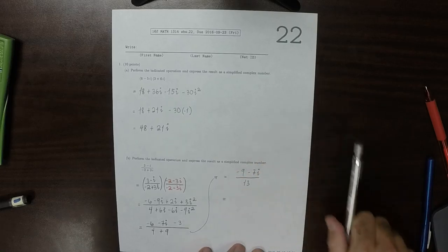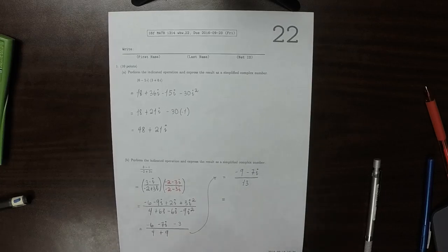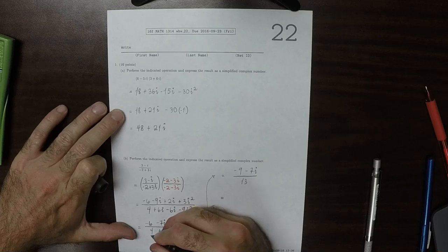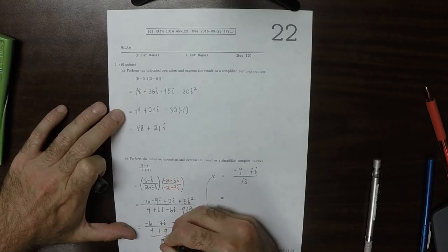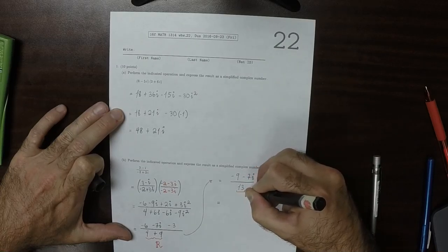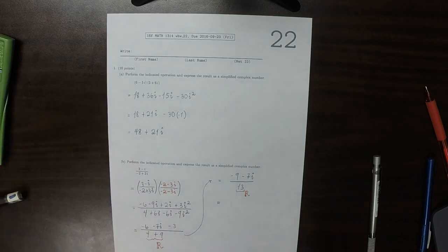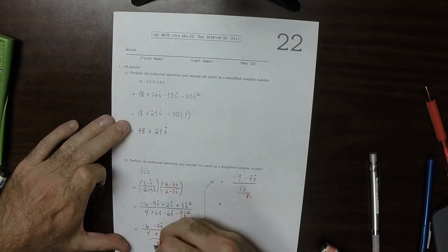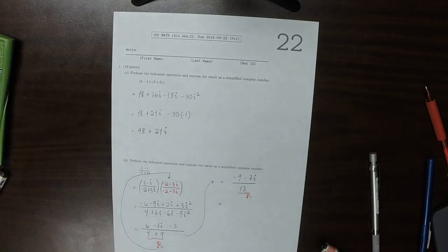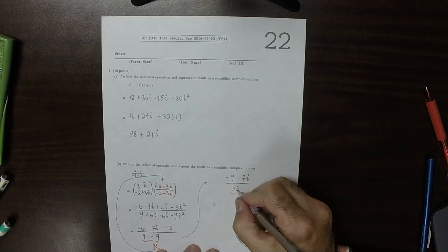And now notice that this denominator is real. That was the whole point of selecting the conjugate, so that the denominator would eventually become real. So then we can divide this into the individual pieces.